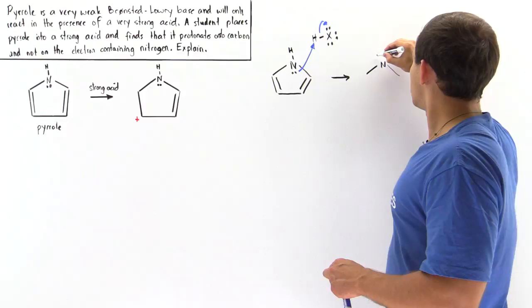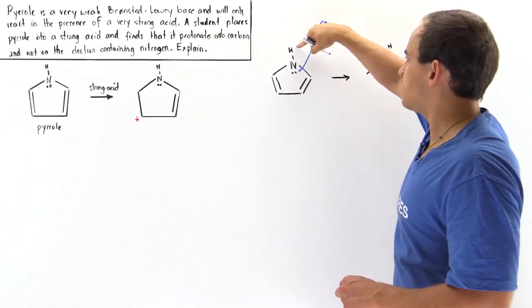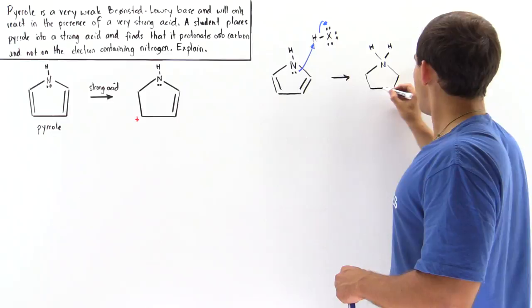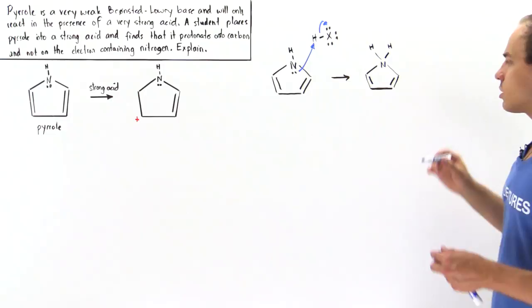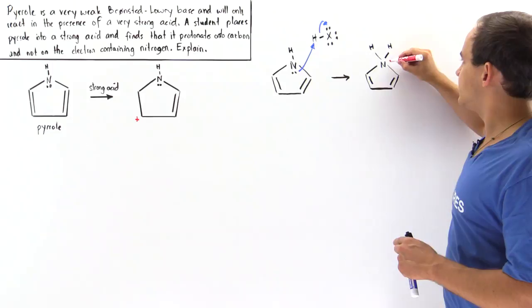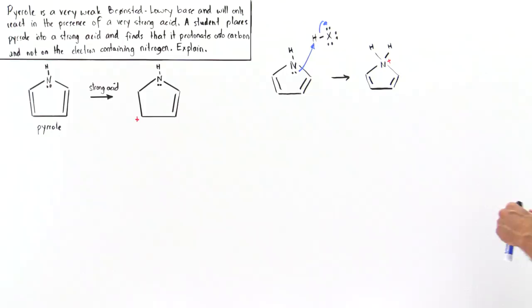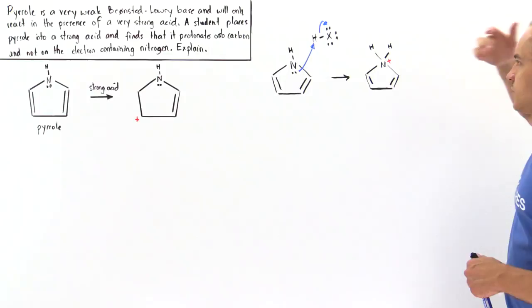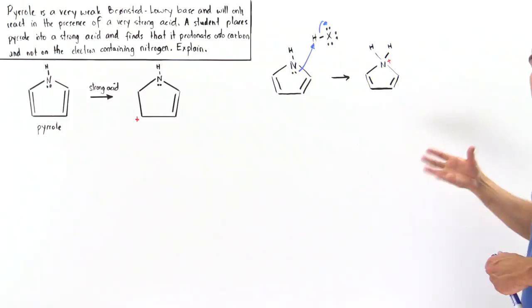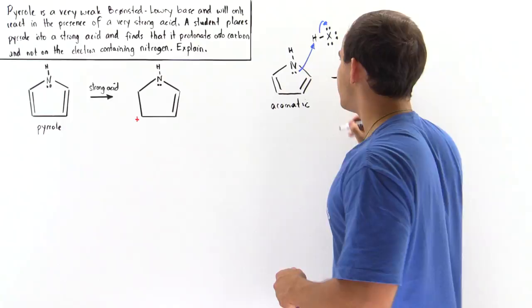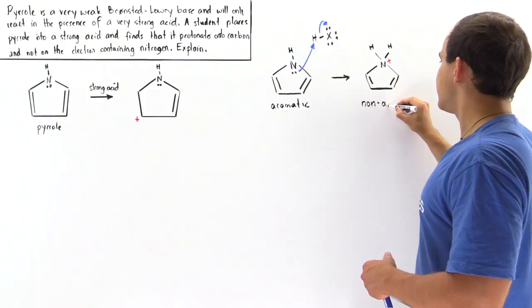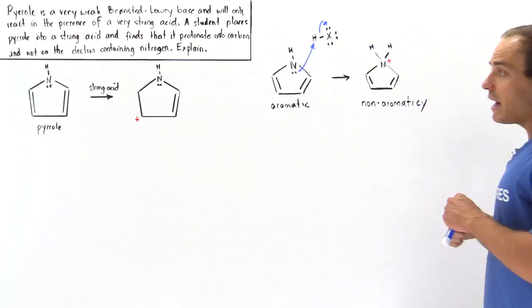As a result, the nitrogen would contain two H atoms — one that was already there, and one that comes from our acid. This gives us the conjugate acid of the pyrrole molecule. Notice the pi bonds have not been touched; they remain on the molecule. However, because the nitrogen now contains three bonds, we have sp3 hybridization, and the molecule carries a positive charge. This means we go from an aromatic pyrrole molecule to a conjugate acid that is non-aromatic, so we lose aromaticity.